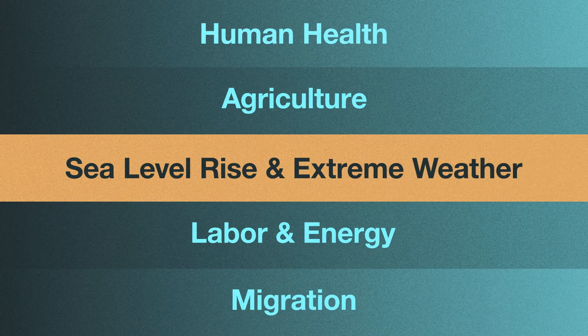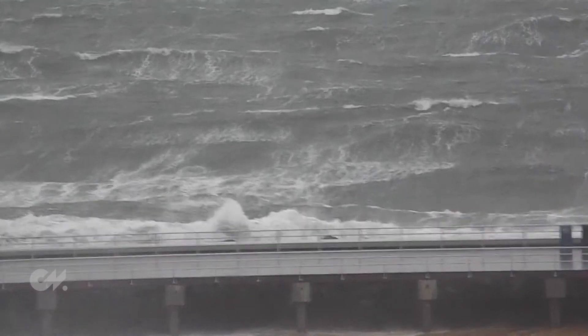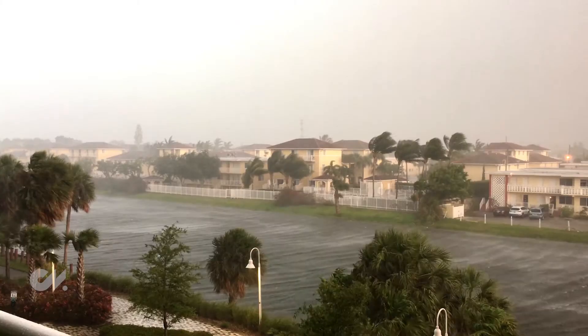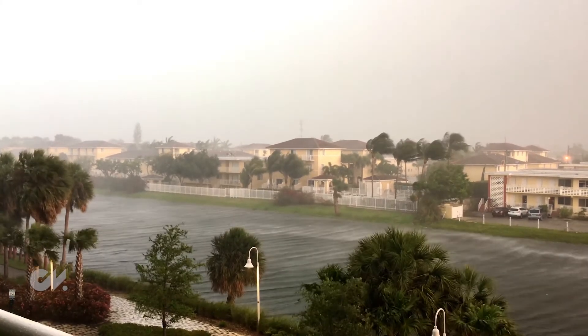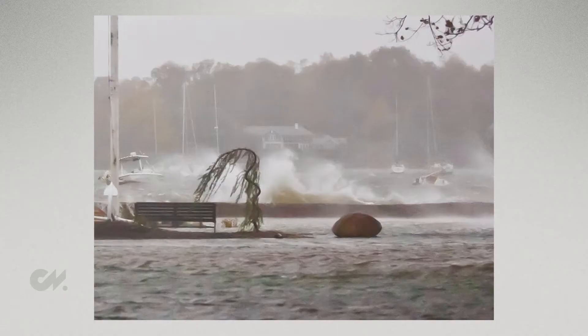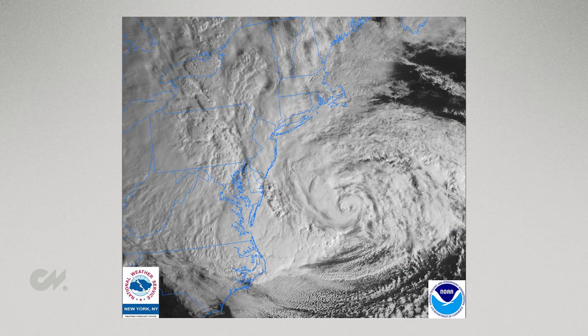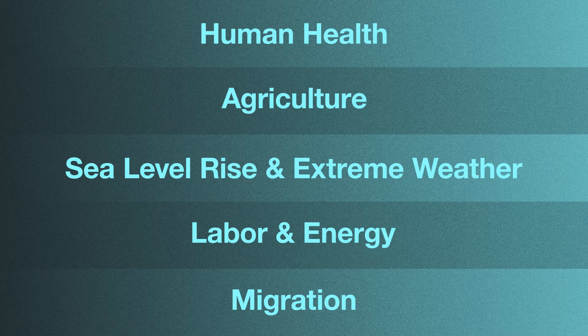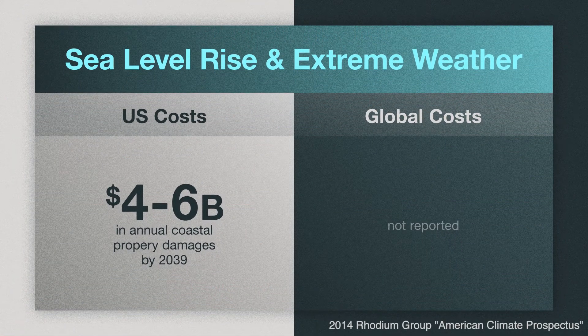Moving now to the costs of sea level rise and extreme weather. Sea level rise, according to the Climate Impact Lab, is responsible for compounding the effects of other natural events like hurricanes and tropical storms. For example, the record 13.9-foot storm tide in New York Harbor during Superstorm Sandy was augmented by more than a foot due to climate-driven sea level rise. As major weather events become the norm, costs will increase as well, and insurance companies will be one of the entities responsible for paying up. U.S. coastal property damages are expected to reach costs around $4 to $6 billion a year by 2039 due to climate-related events — and worldwide, it's going to be much, much larger.